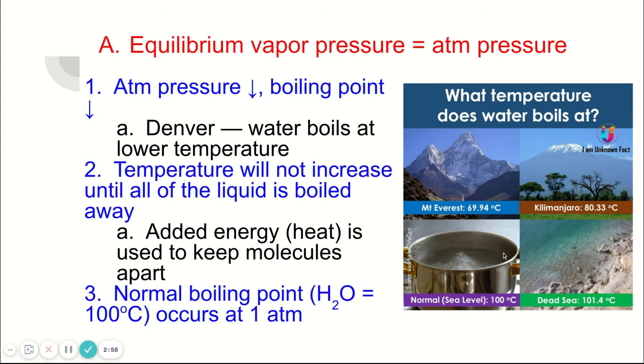You can see in this picture on Mount Everest water would boil at under 70 degrees Celsius. That's a hot day, like most days here in Southern California it is 70 degrees Celsius, so that means our water would already be boiling if our pressure was as little as it is on the top of Mount Everest.